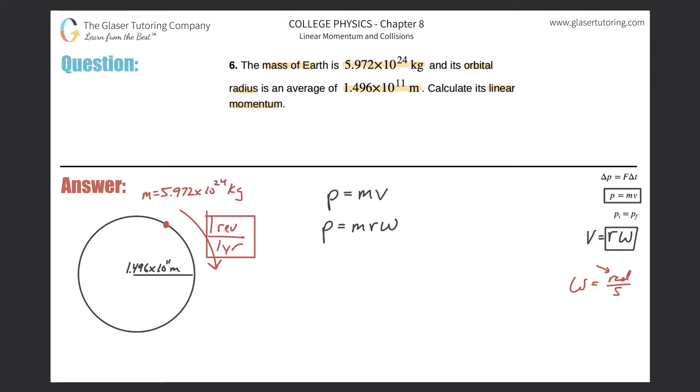I'm going to plug in the one revolution per year and do the conversion right in the formula itself. So the momentum here will be equal to the mass of the earth, which they told us was 5.972 times 10 raised to the 24th, multiplied by the radius they told us, the radius was 1.496 times 10 raised to the 11th.